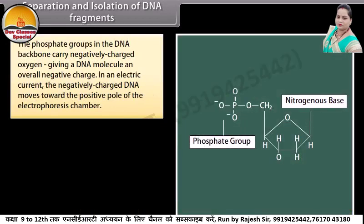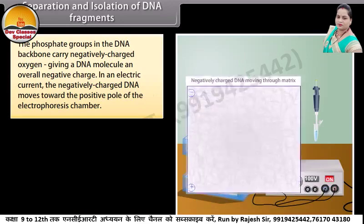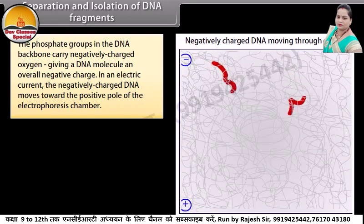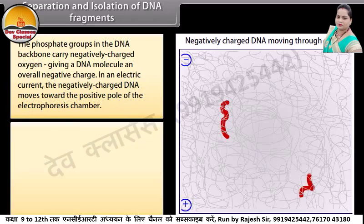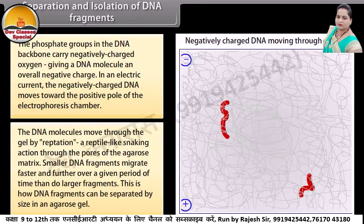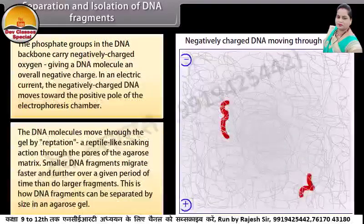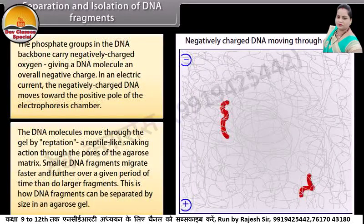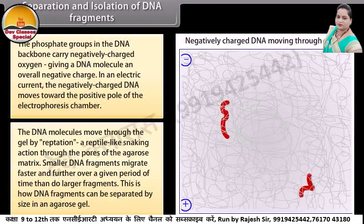The phosphate groups in the DNA backbone carry negatively charged oxygen, giving a DNA molecule an overall negative charge. In an electric current, the negatively charged DNA moves towards the positive pole of the electrophoresis chamber. The DNA molecules move through the gel by reptation, a reptile-like snaking action through the pores of the agarose matrix. Smaller DNA fragments migrate faster and further over a given period of time than larger fragments. This is how DNA fragments can be separated by size in an agarose gel.